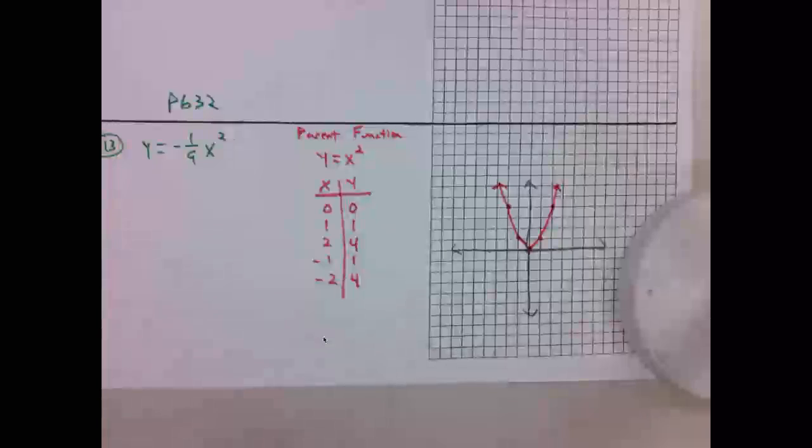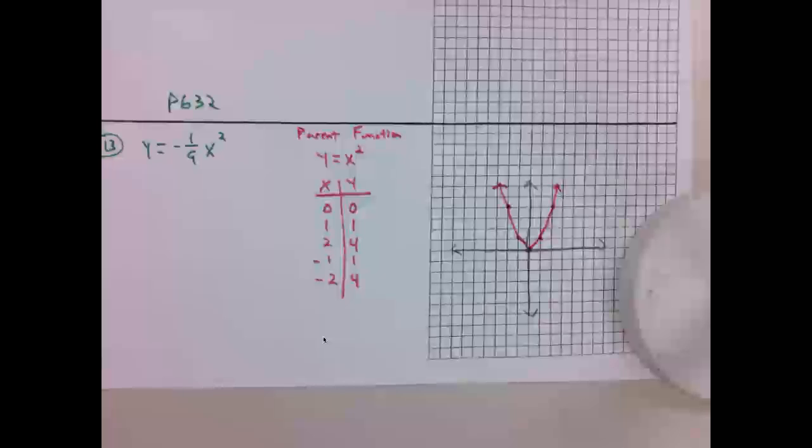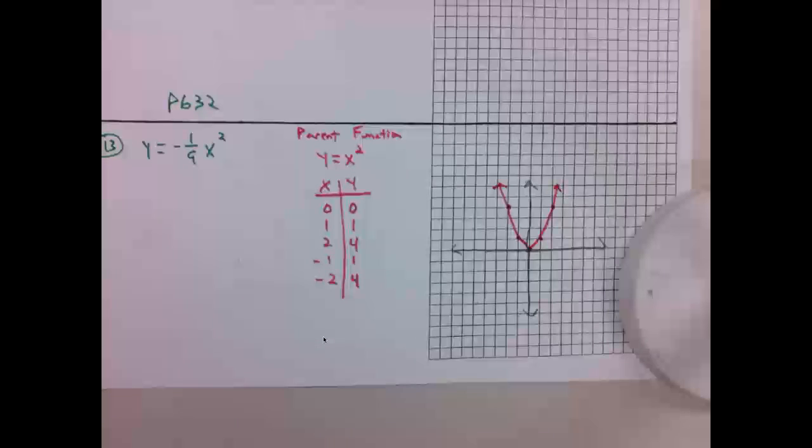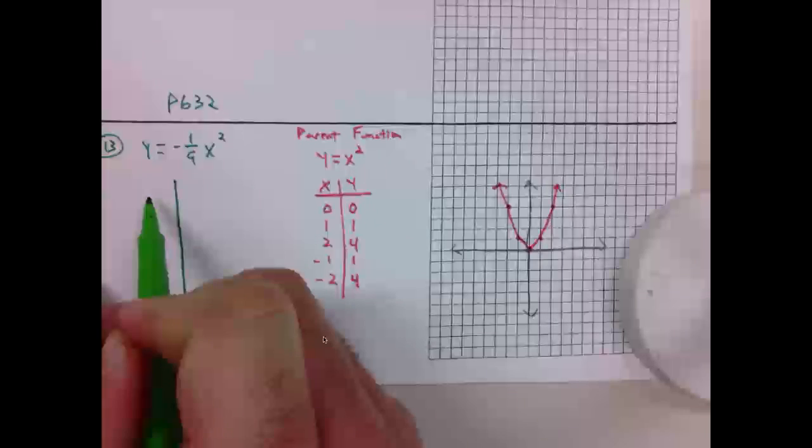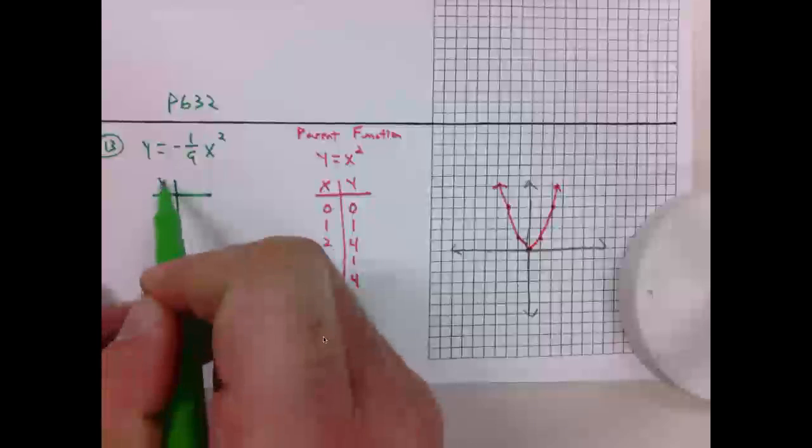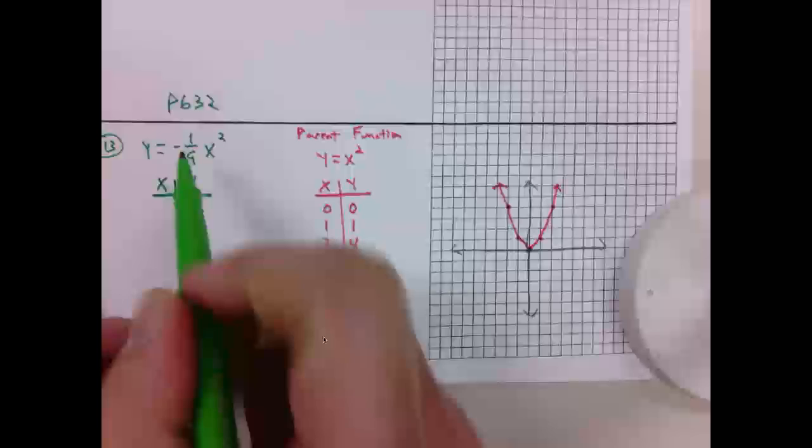We're now going to compare this to y equals negative 1/9 x squared. You don't have to use the same x values. I'm going to choose ones that are going to help with my graph in this case. Because this is 1/9, I know if I could get this to be a 9, it would look kind of nice.